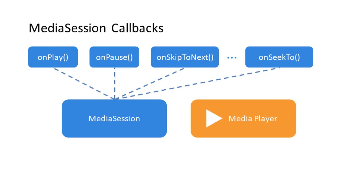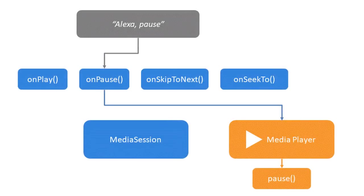There are two main components: the Media Session and the Media Player itself. The Media Session provides a set of callbacks which are linked to all the actions available to the Media Player, like play, pause, skip to next, etc. The voice controls directly map into these Media Session callbacks, meaning that every time a customer executes a voice command, the Media Session callback is then invoked. For example, if the customer says "Alexa, pause," the onPause callback of the Media Session is called. We then invoke the actual Media Player pause method from within the Media Session callback. In a way, Media Session acts as a middleman between the Alexa command and the actual Media Player in your app.